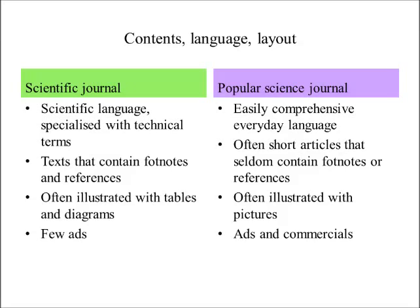The contents of a scientific journal use a scientific language specialized with technical terms. The text contains footnotes and references, and it is often illustrated with tables and diagrams, with very few ads. The popular science journal has an easily comprehensible everyday language. There are often short articles that seldom contain footnotes or references, they are often illustrated with pictures, and they contain ads and commercials.